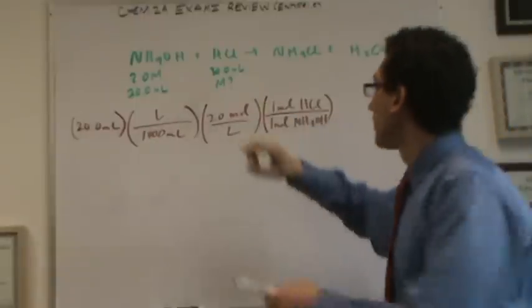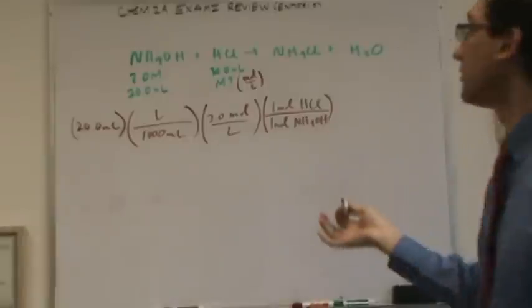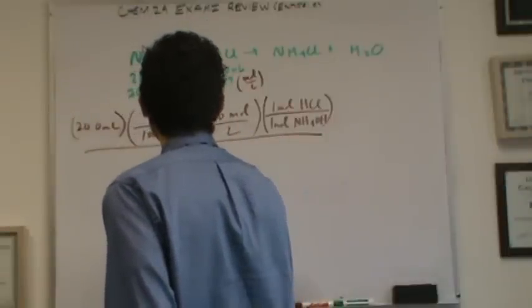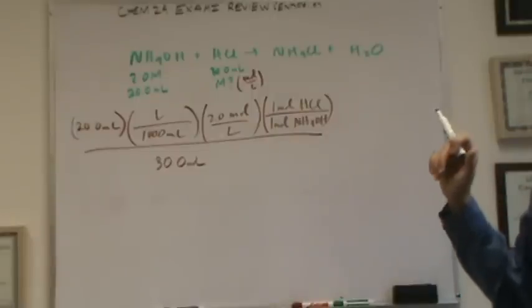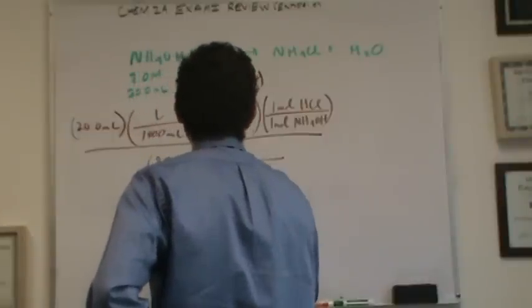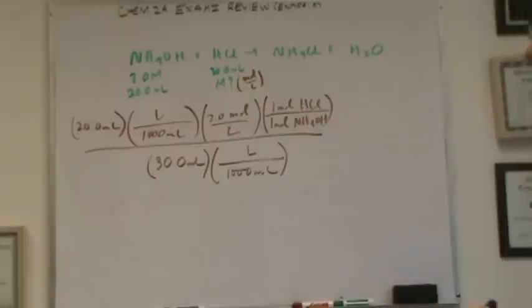Cool, we're almost there. Remember, molarity is moles per liter. So we've got the moles, actually. We've just got to divide by the volume. So let's divide by the 30 milliliters that was given. The only problem with that is, I've got 30 milliliters by 80 liters. So let's change this to units of liters, divide by 1,000 milliliters, and multiply by 1 liter, and there we go. Whatever the answer to that is, is going to be the answer to your question. That'll be the molarity of the unknown HCl.